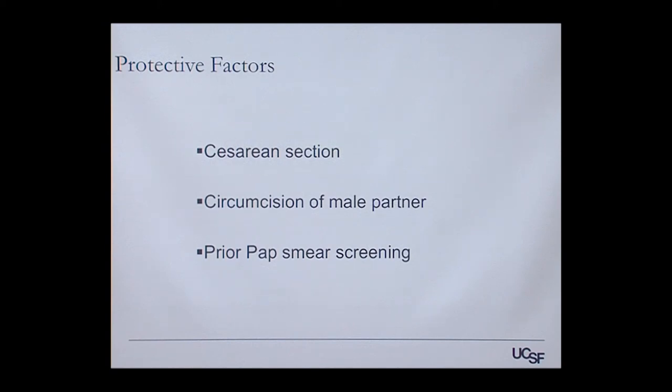There are some protective factors. Having had a cesarean section reduces the likelihood of cervical cancer by about half. Circumcision of the male partner is protective because circumcised males seem less likely to carry and transmit HPV. Having ever had a pap smear — even just one — drops the likelihood of cervical cancer tenfold, because it picks up changes before cancer has a chance to develop.